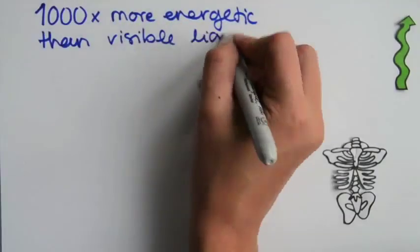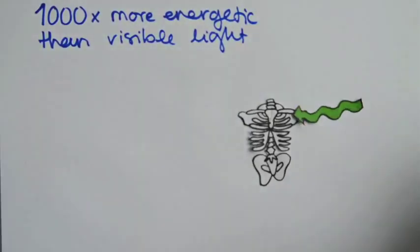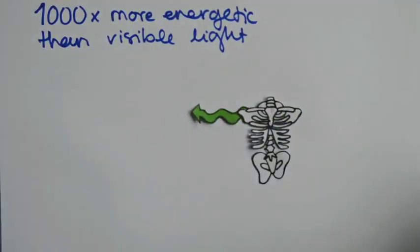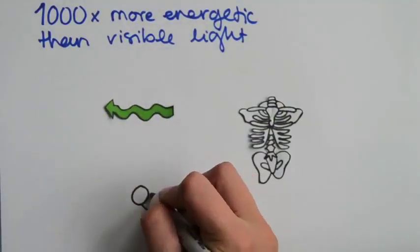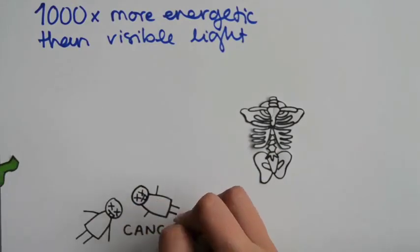Gamma radiation is a thousand times more energetic than visible light, and it can pass straight through a human body. Gamma radiation can ironically kill cancer cells and germs.